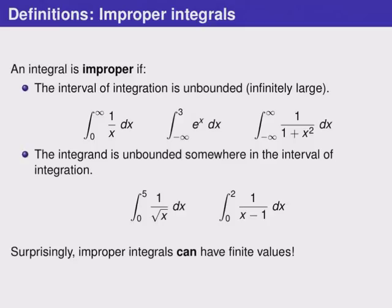In the second case we can see how x equals 0 is a problem for 1 over square root of x, but x equals 1 is a problem for 1 over x minus 1, and that's in the middle of the range over which we're integrating.